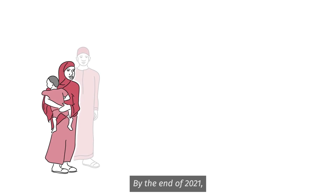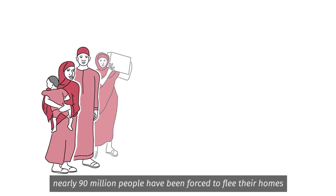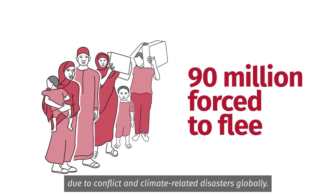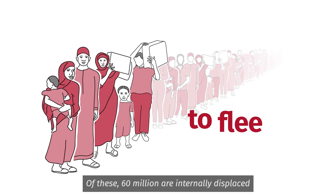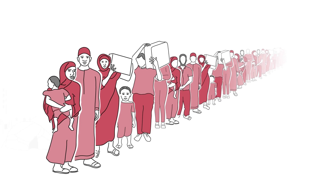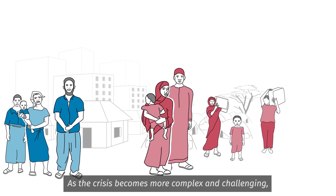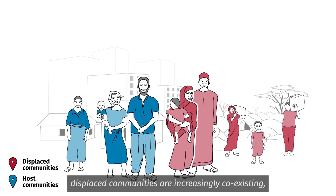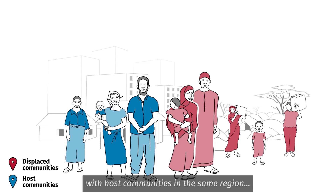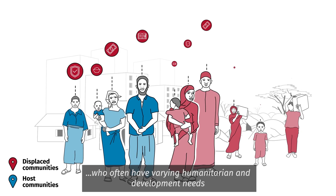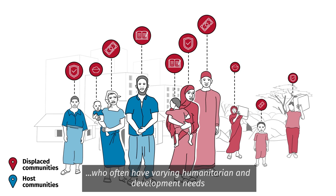By the end of 2021, nearly 90 million people have been forced to flee their homes due to conflict and climate-related disasters globally. Of these, 60 million are internally displaced. As the crisis becomes more complex and challenging, displaced communities are increasingly coexisting with host communities in the same region, who often have varying humanitarian and development needs.